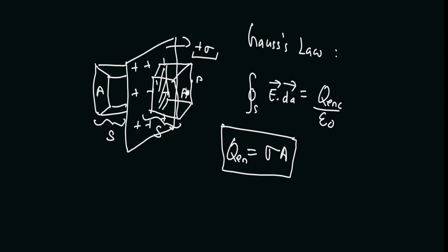Now, the electric field has to point perpendicular, or normal, to the sheet. Since the surface charge density sigma is uniform — if the electric field pointed in some other direction, the positive charges would move along that direction, creating more charge in one region, and the surface charge density would no longer be uniform. That is why the electric field must point along the normal unit vector n.